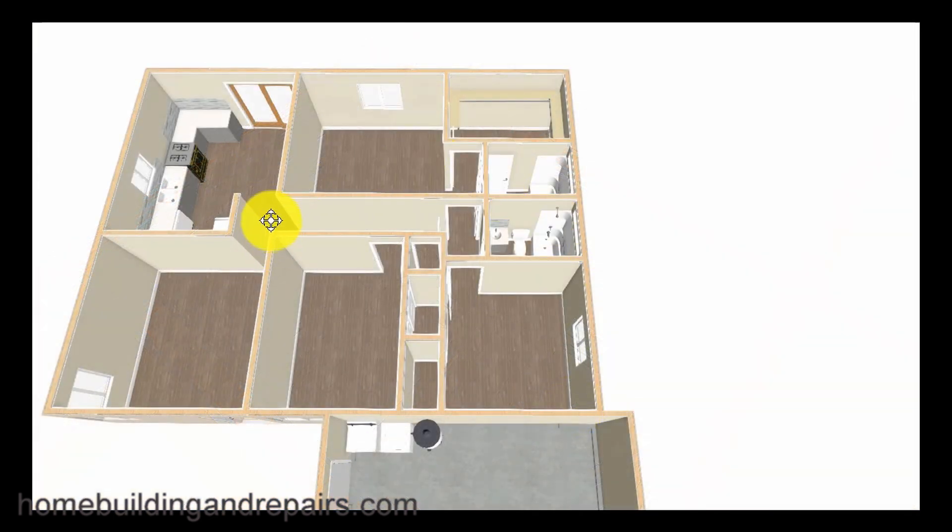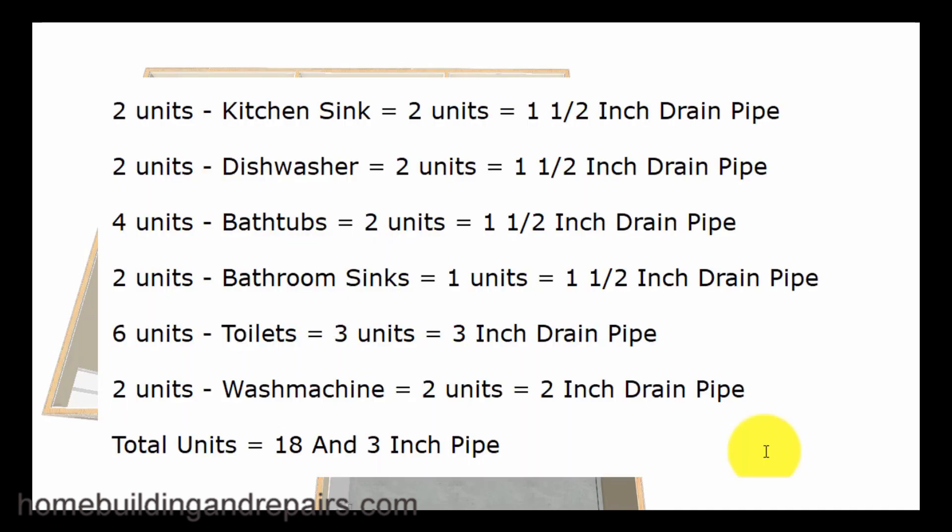So let's go ahead and pan out here and add up all of our fixtures. We have a kitchen sink, and then we have a dishwasher. And then we have two bathtubs, two toilets, and two sinks. And then last on our list will be the wash machine. Next up, let's go ahead and add up the total amount of units. We have one kitchen sink providing us with two units, a dishwasher providing us with another two units. And then since we have two bathtubs at two units each, we're going to have four units. And then since we have two bathroom sinks at one unit each, we're going to have two units. And the same with the toilets, we're going to have two toilets. So two times three is going to be six units. And then last on the list, we will have two more units for our wash machine, providing us with a total of 18 units, allowing us to use a three-inch pipe.